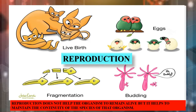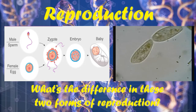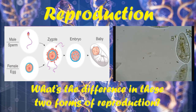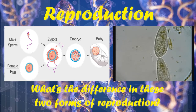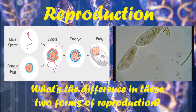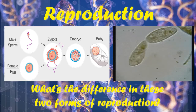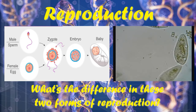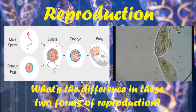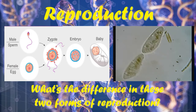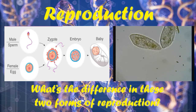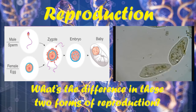So let's get started with this chapter: Reproduction. Here you can see two images — in one you will see a microorganism that is paramecium, and in the other you see a small human baby. There is a difference in these two forms of reproduction, and in today's chapter we will be talking about these two differences.